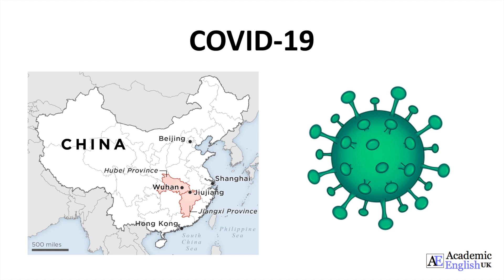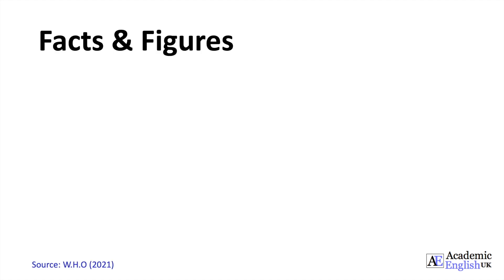The virus is still ever-present in almost every part of the world, and mutating and creating other strains. The global spread of COVID-19 is having a devastating effect on human lives, and is representing an unprecedented shock for the world's economy. I'm going to start today by looking at some of the shocking facts and figures.